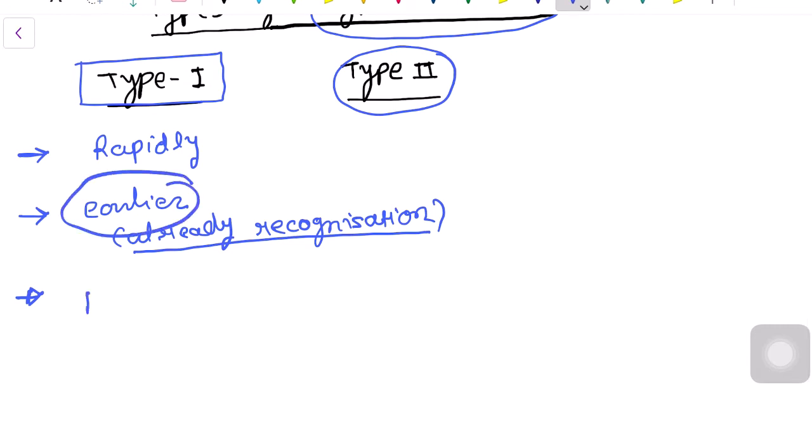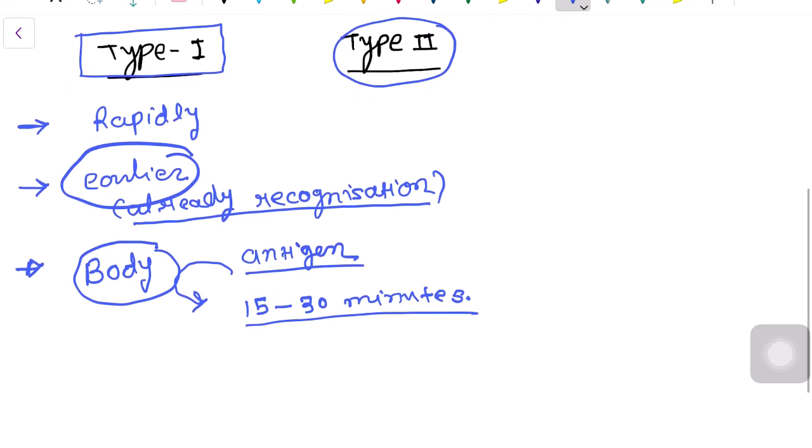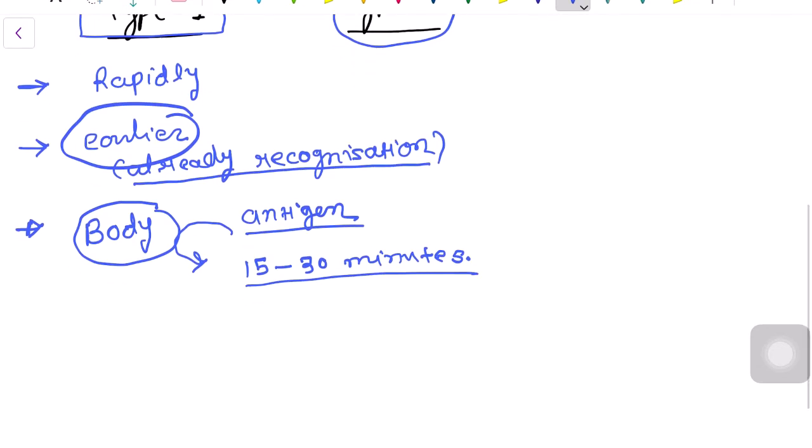Similarly, in our body, when the body already recognizes a particular antigen and that antigen enters again, within 15 to 30 minutes our body reacts and produces an antigen-antibody reaction. This is known as type 1 hypersensitivity reaction, and the antibody regulating this immune response is IgE antibody.